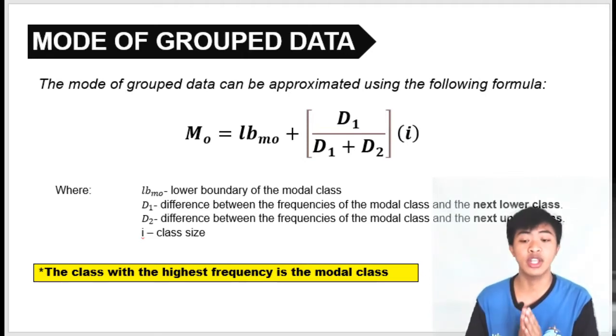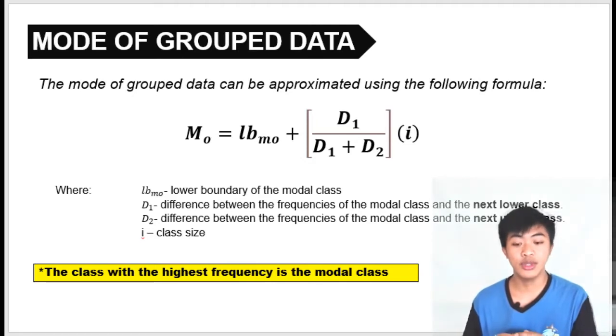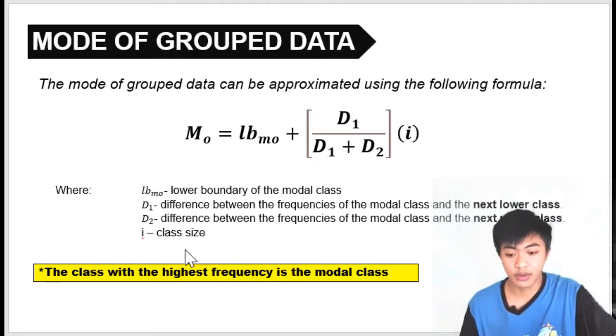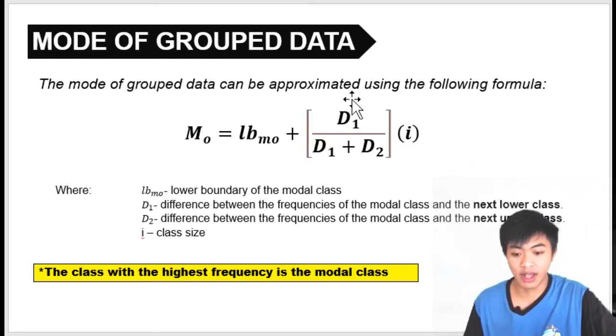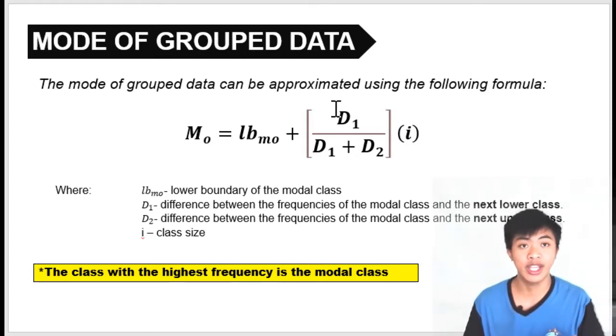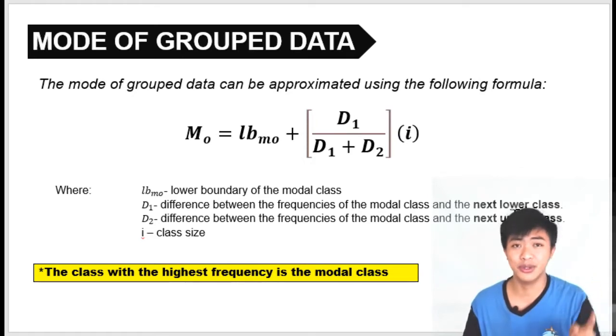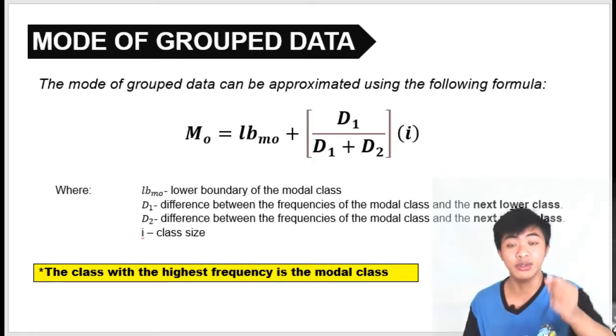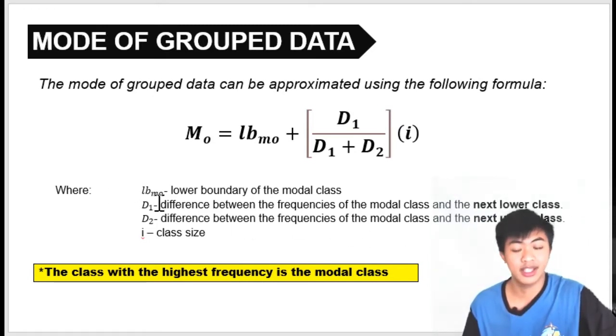What we're going to do is approximate the mode using this formula. The mode of the grouped data equals the lower boundary of the modal class plus D sub 1 over D sub 1 plus D sub 2, multiplied by the class size. The D sub 1 and D sub 2 are differences, and when we say differences, subtraction is involved. The video I uploaded previously had D sub 1 and D sub 2 reversed.